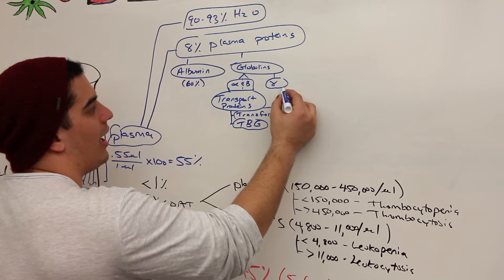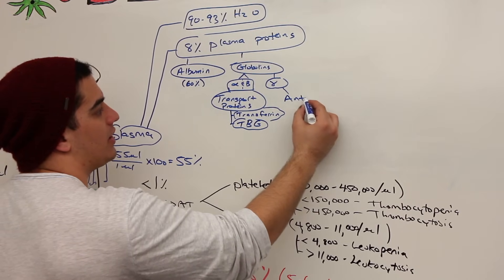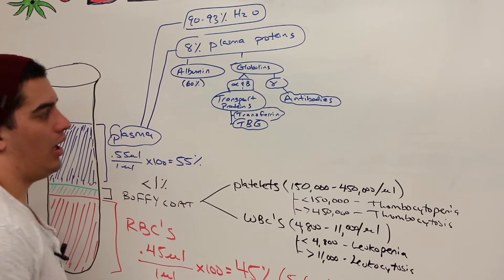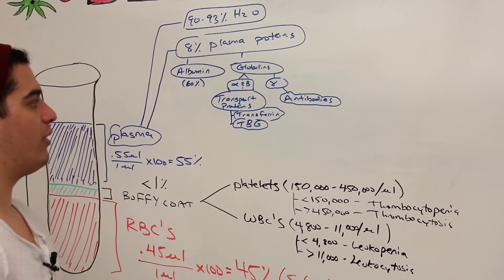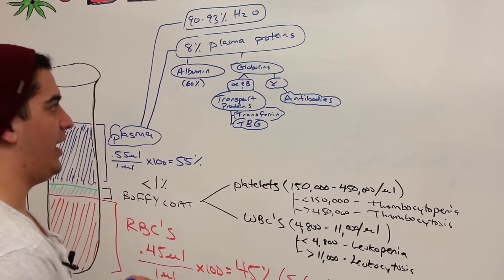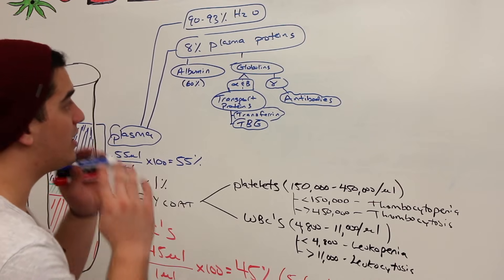What about gamma globulins? Gamma globulins are your antibodies. So these are like antibodies. And these are produced by your plasma cells, which are differentiated B cells. And they're good for fighting off different types of pathogens by opsonizing them or activating certain types of pathways. So that's the big components.